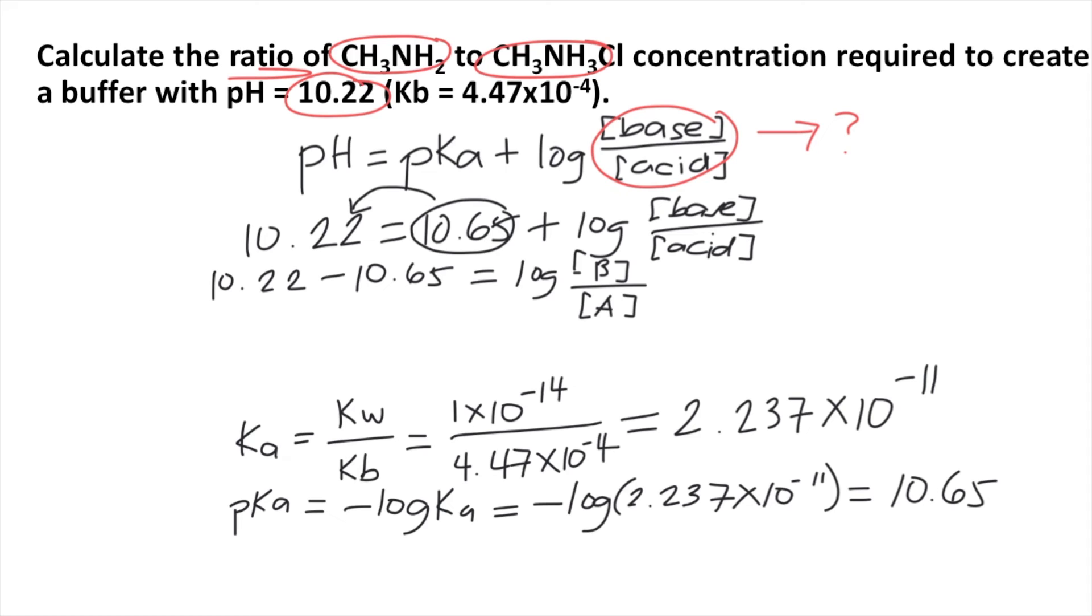On the left side, you now have 10.22 minus 10.65. That's equal to negative 0.43, and that's equal to the log of base over acid.